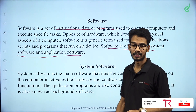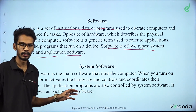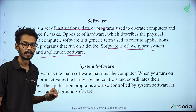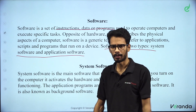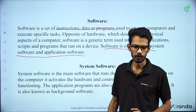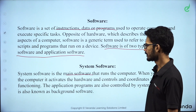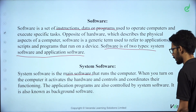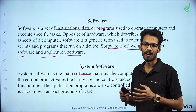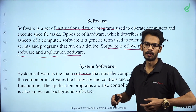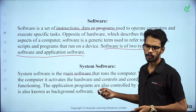What is system software? System software is the most important software. When you are on a system, it can activate all the hardware and coordinate all the hardware. That is system software. When you use system software, you can control hardware.